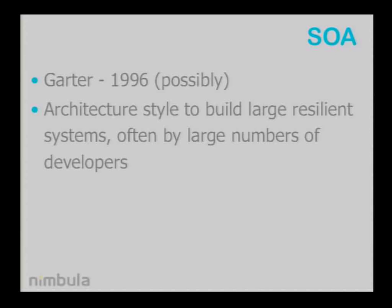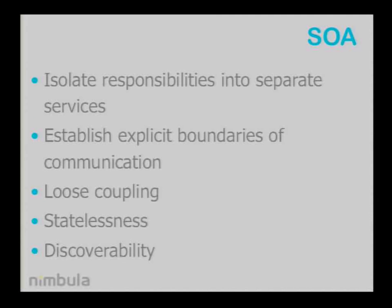Service-oriented architecture is a term which Gartner claims they invented in 1996, although people dispute them on that. It's styled as an architecture to build large resilient systems, often created by large numbers of developers who have to interact with each other and with each other's code. The concepts here are to isolate responsibilities into separate services, to make sure that something dealing with a certain area of the problem is kept out of the way of everything else, establish explicit boundaries of communication between these services so the interface is well defined, have loose coupling between services so they aren't digging into each other's internals, try to establish stateless services, and make sure that there's discoverability so everything knows what else is available and how to access it.